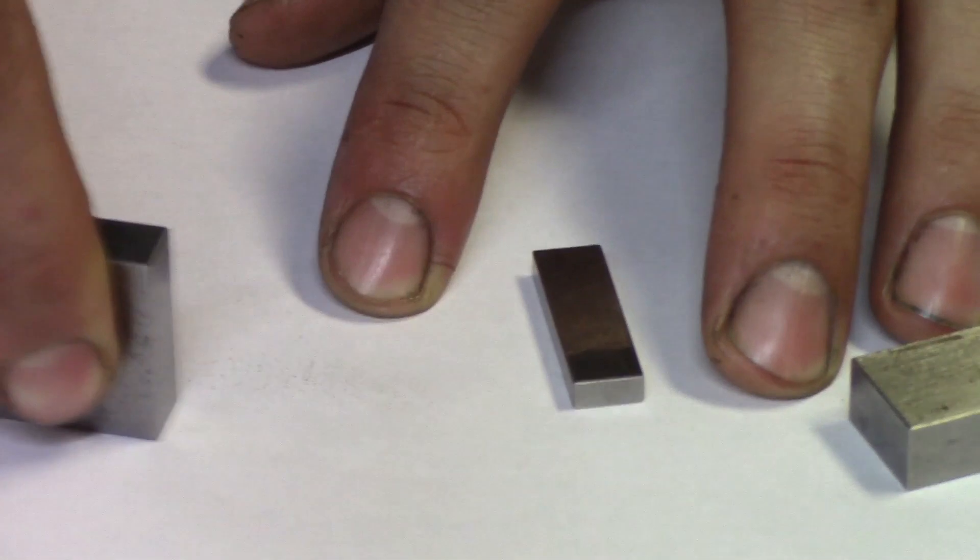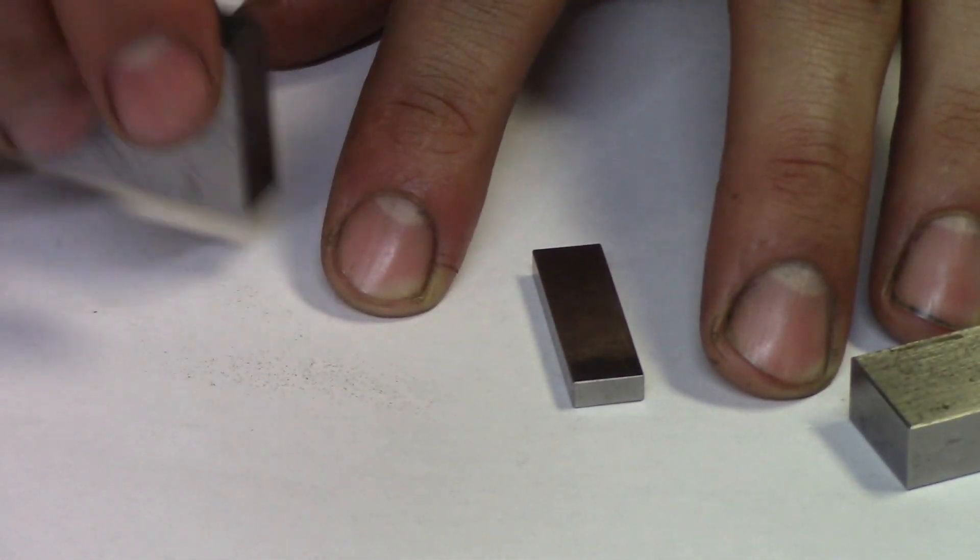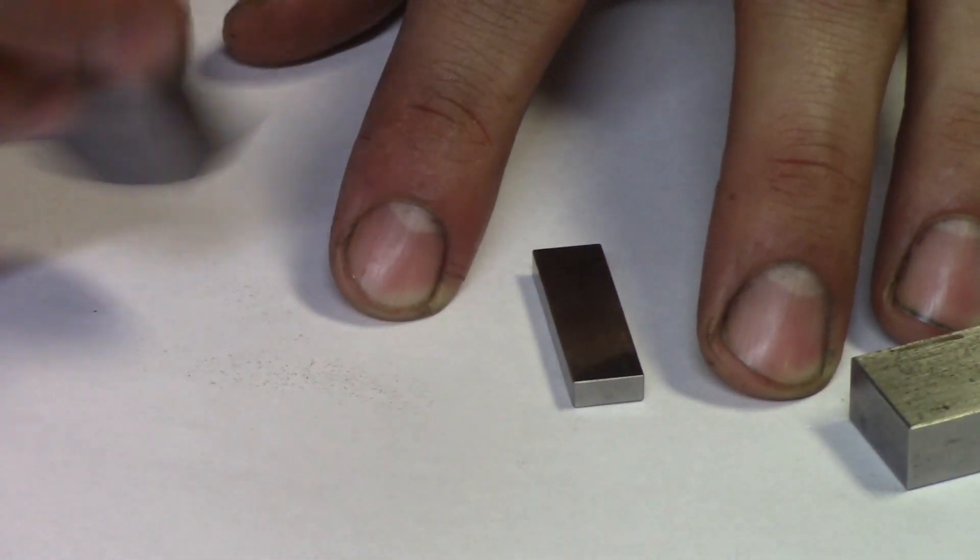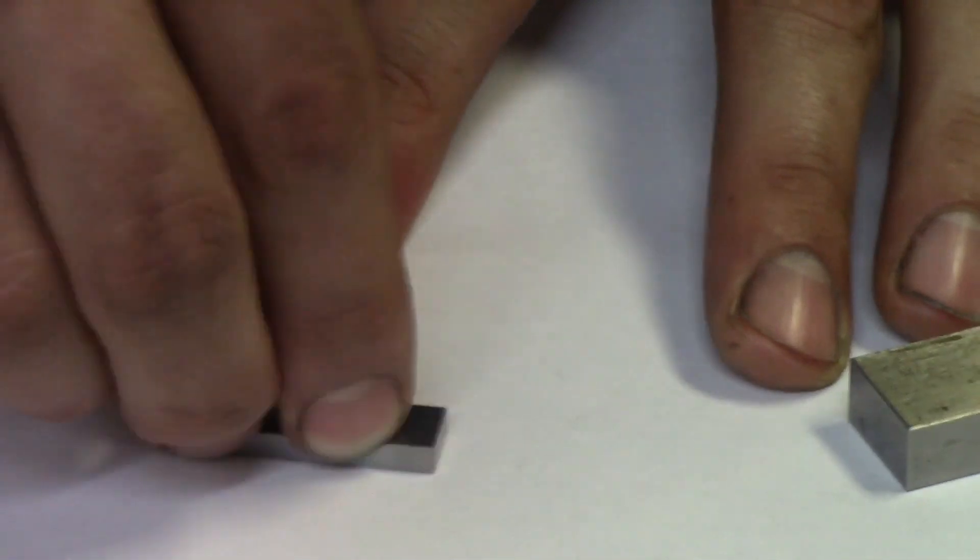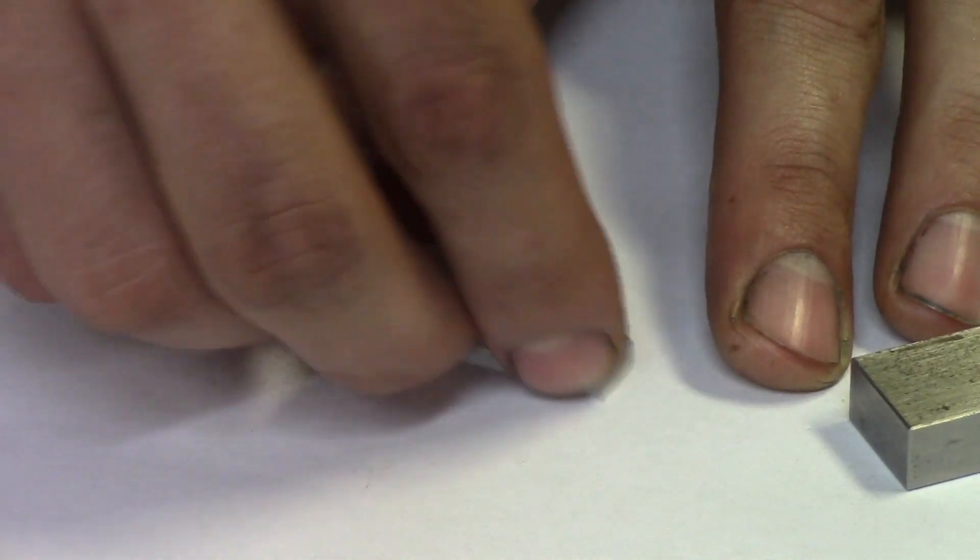You can see that dirt that's coming off your gauge block. So you set the ones that you've cleaned aside and then you move on to the next one. Just use a piece of paper.